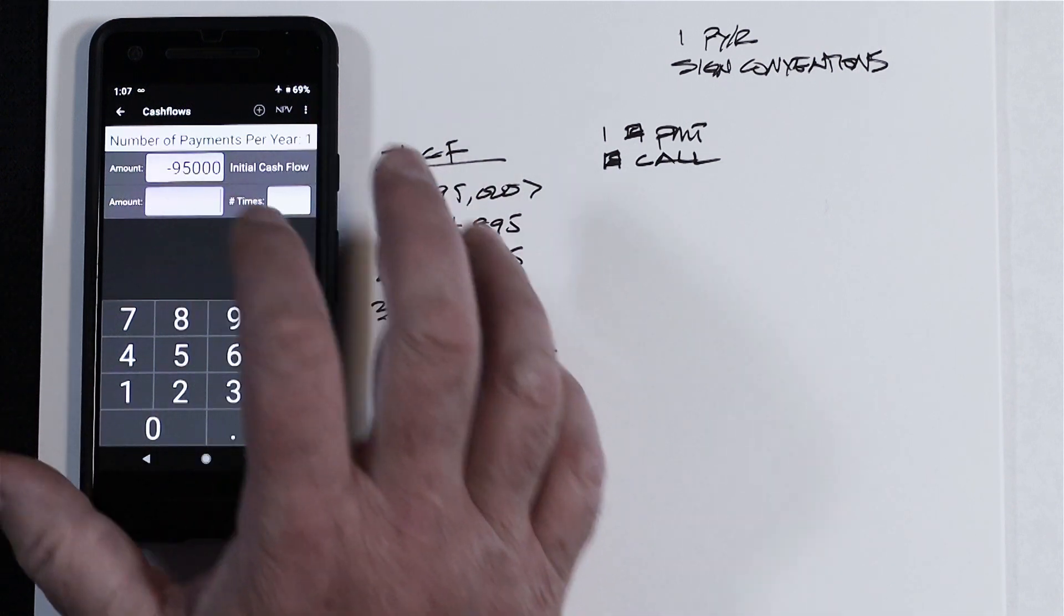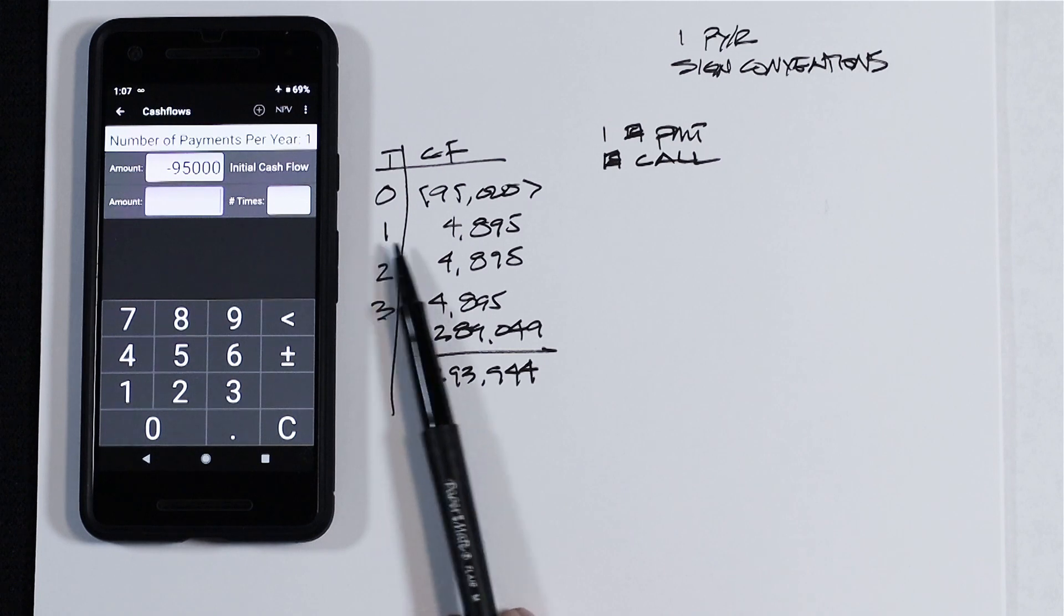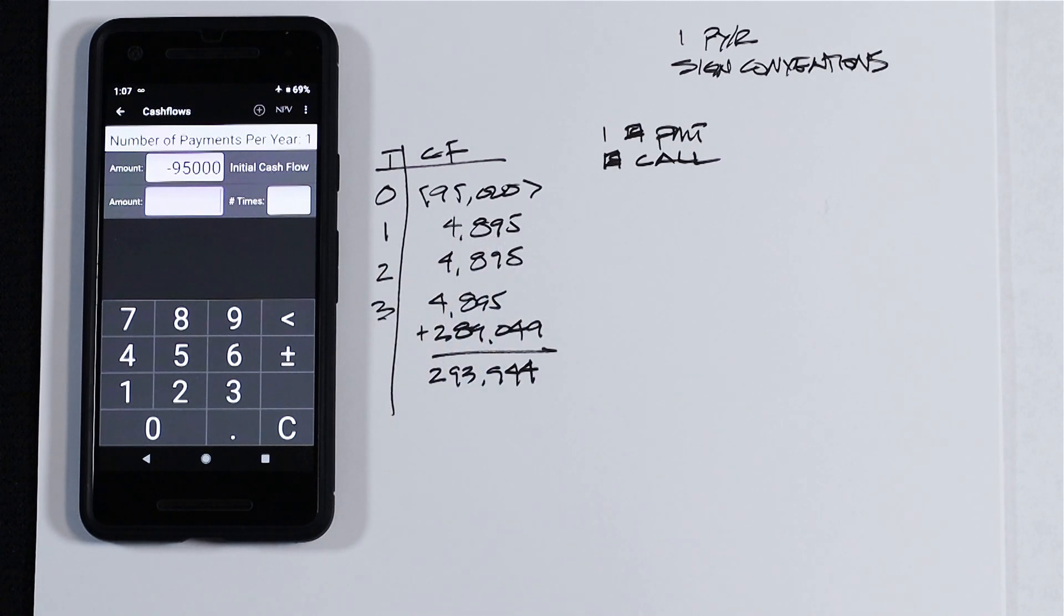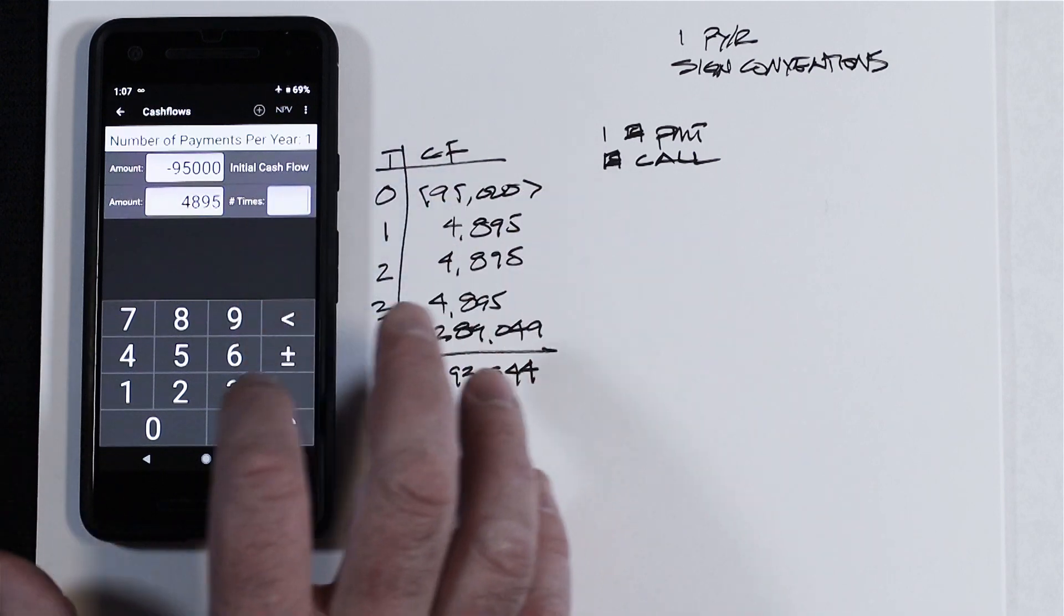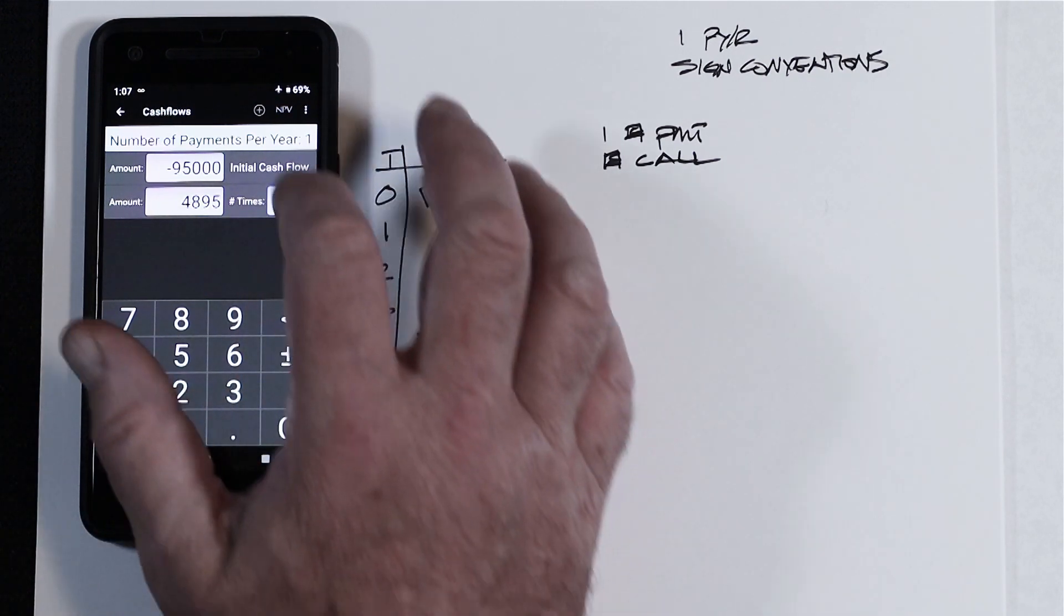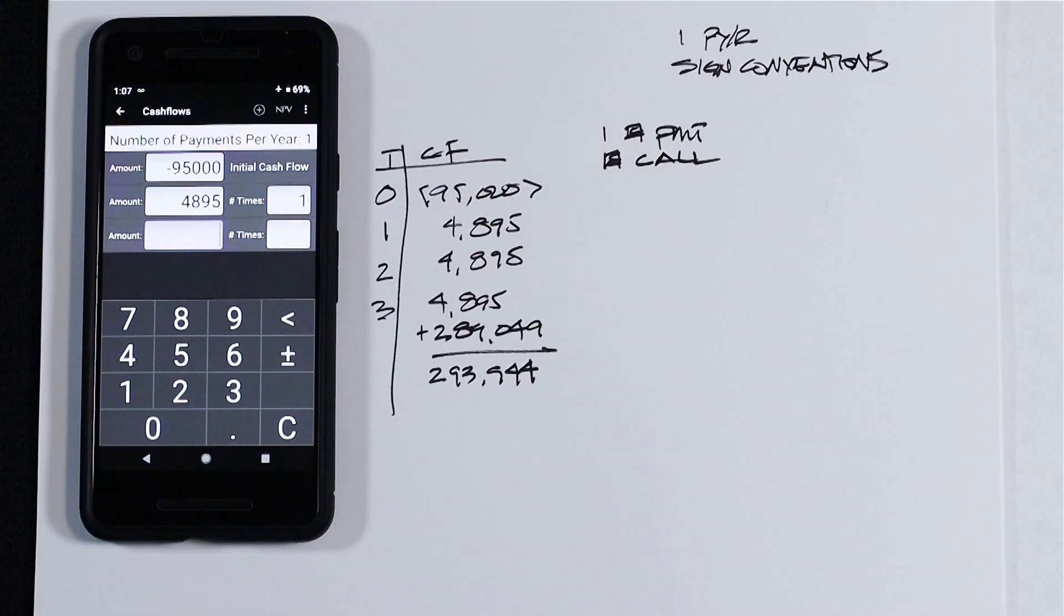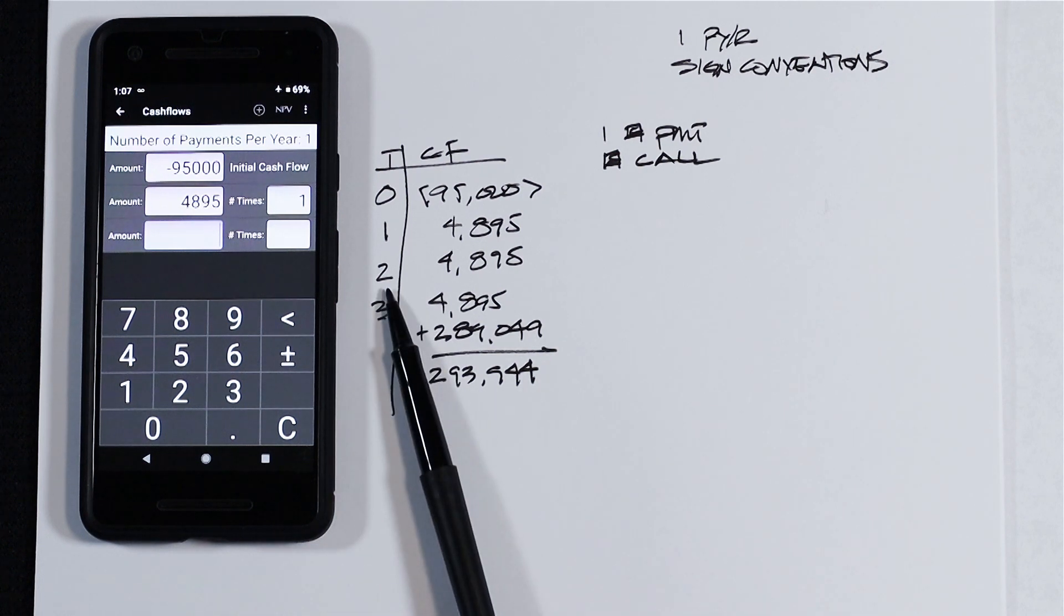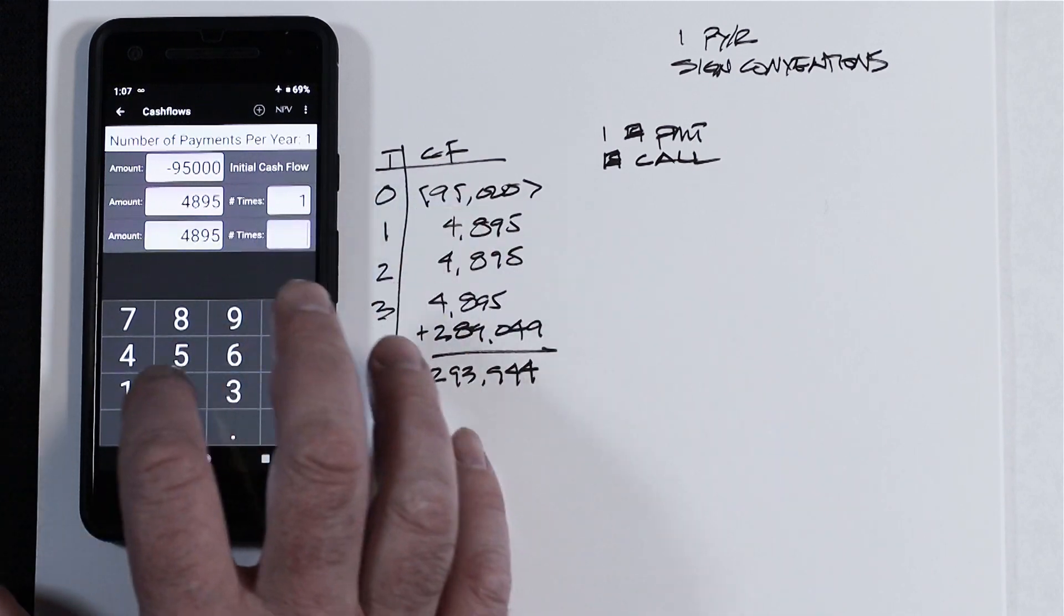Then tap into the amount box in the second row, which is going to accept the value that you have for time period one of $4,895. Tap number of times, tap one. Now create a second row by tapping the circle with a plus. Tap in, this is going to be for time period two, also $4,895. Number of times is one.